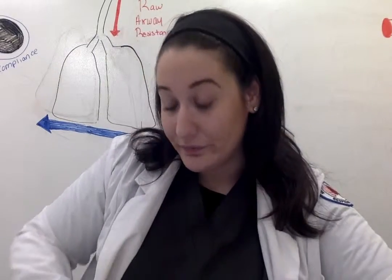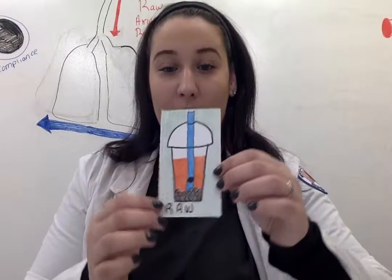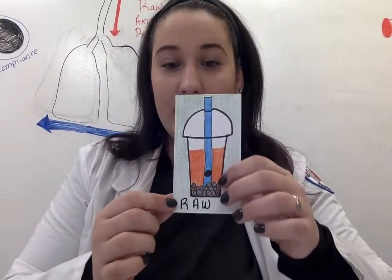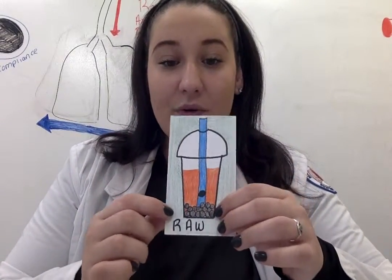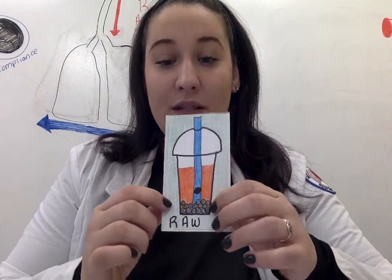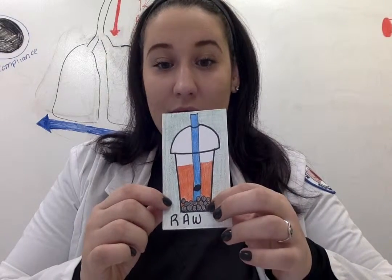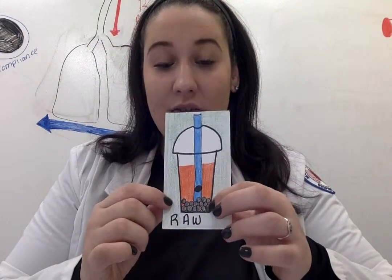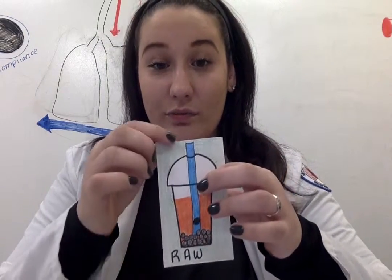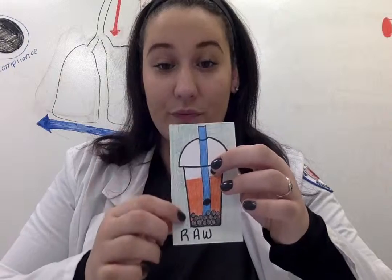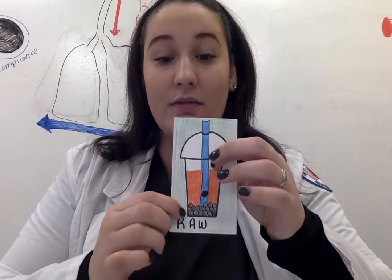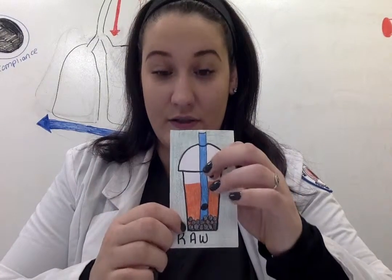For example, we're going to go with a bubble tea. Sometimes the tapioca balls get stuck into the straw, which is creating resistance. A clinical condition can be asthma.